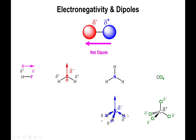The only thing left standing are the vectors pointing upward in the molecule toward the nitrogen. So ammonia has a net dipole moment, much like water and HF. We call all these molecules polar because they have a net dipole persisting in the molecule.